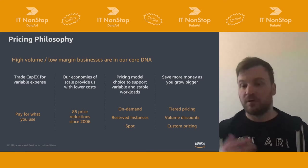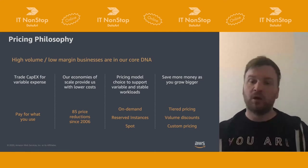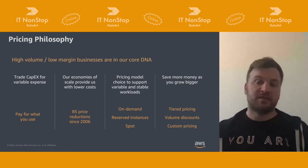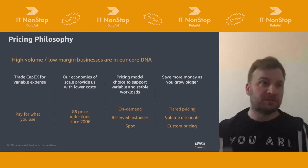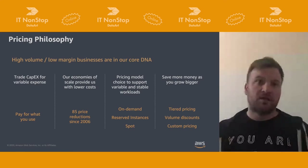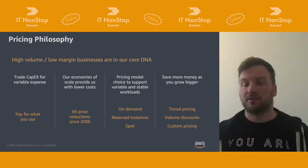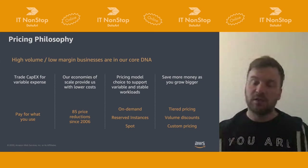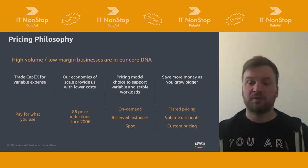There's also an additional savings vector: tiered pricing, volume discounts, or custom pricing depending on your commitment level or long-term understanding of traffic needs — for example, the number of objects in S3. If you're thinking in really large amounts, you can get additional discounts.